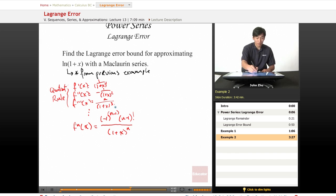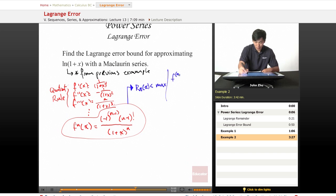Now that we know this general form for f^(n)(x), we can apply it to our error bound formula. The error bound formula states that the bound is less than the max of f^(n+1)(c) times (x-a)^(n+1) over (n+1)!.